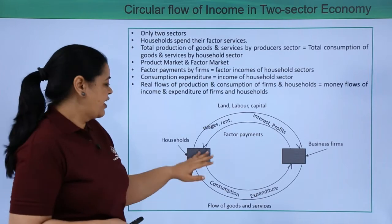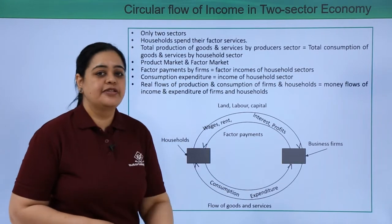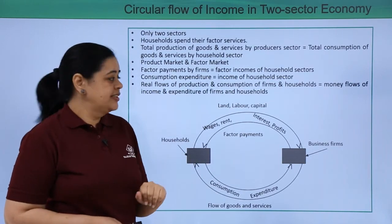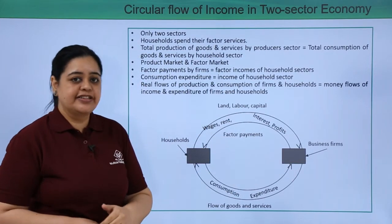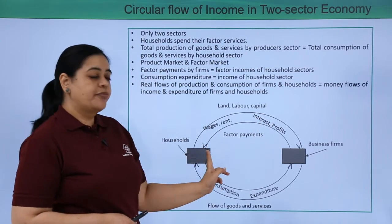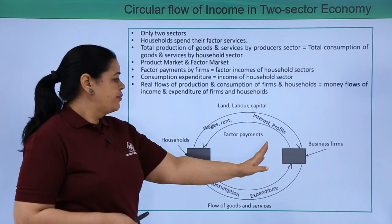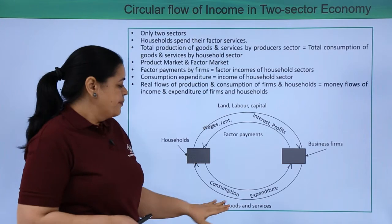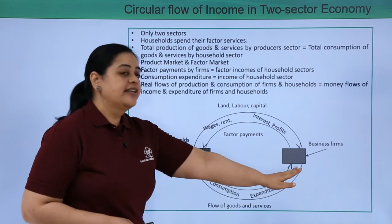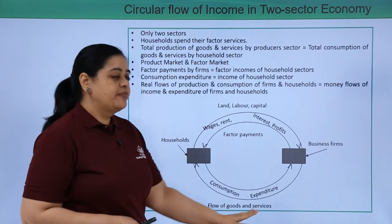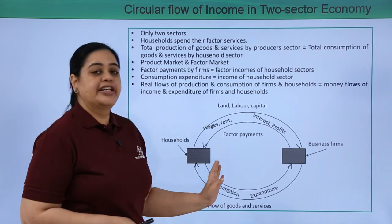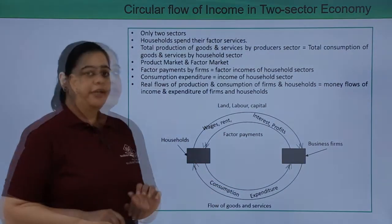Looking at this diagram, we have the households on one side and the business firms on the other. They are providing the factor services — land, labor, capital, everything. In turn, they are receiving wages, interest, and profits — that is the factor payments. As they receive the factor payments, that becomes the household income, and they will start going in for expenditure. So there would be a flow of goods and services, and the circular flow will continue — the business firm will continue producing goods.